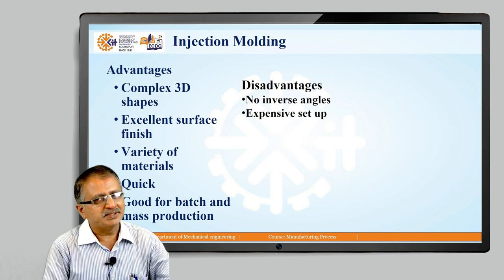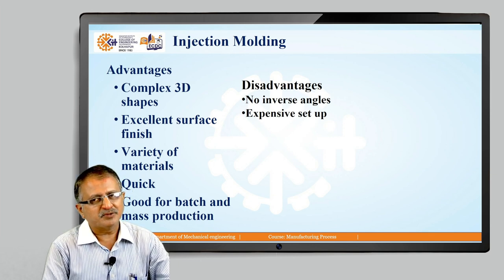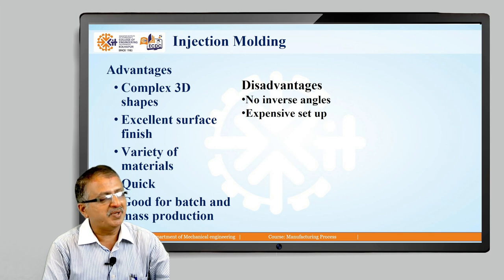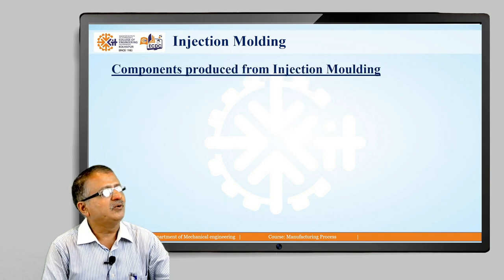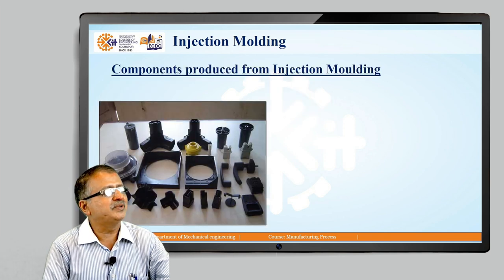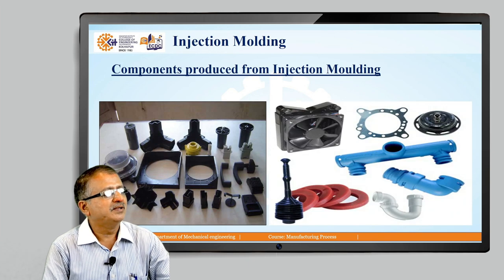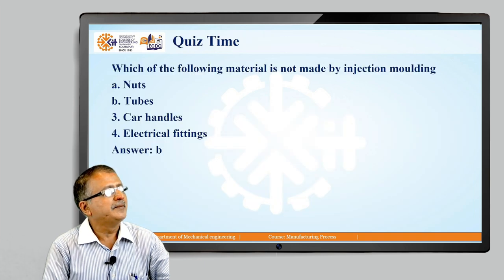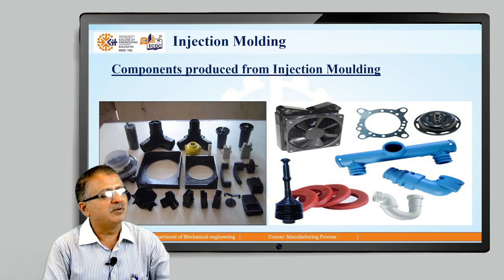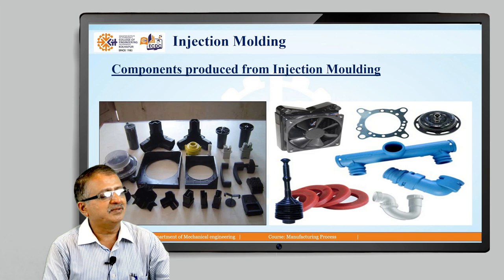Advantages of injection molding: complex 3D shapes can be produced, excellent finish, we can process a variety of thermosetting and thermoplastic materials, it is very quick, and it is very good for mass production as well as batch production. The only disadvantage is expensive setup — it is viable only for long production runs. Practical examples shown in the field demonstrate that this is a very important process, and the variety of complicated components can be produced to a net shape with very little waste, dimensional stability, and dimensional control.